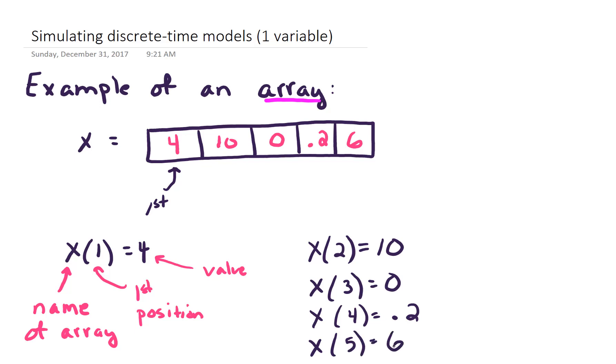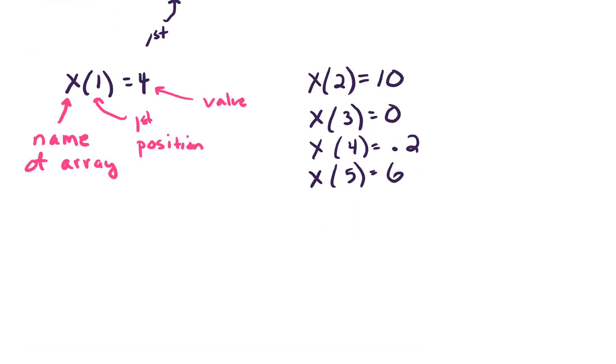So this is a really useful way to keep track of lots of data. If we had a list of 10 numbers or 100 numbers, we could make an array and stuff those numbers into the array to keep track of them. And we could call them out and plot them and do all sorts of things. So let's take a look at a discrete time model in one variable.